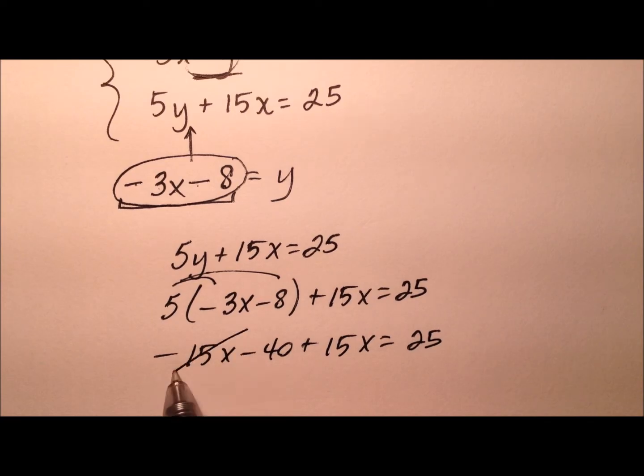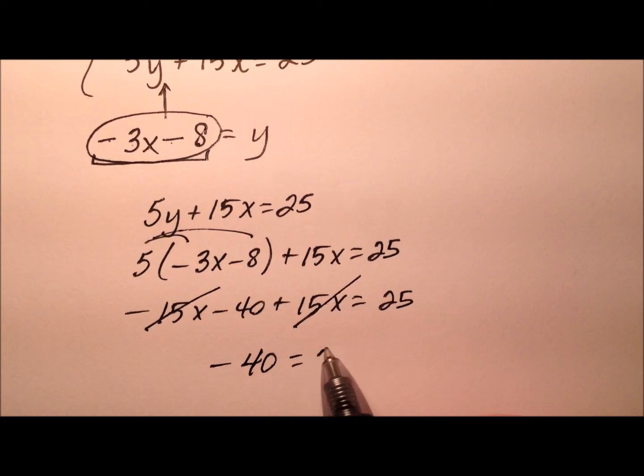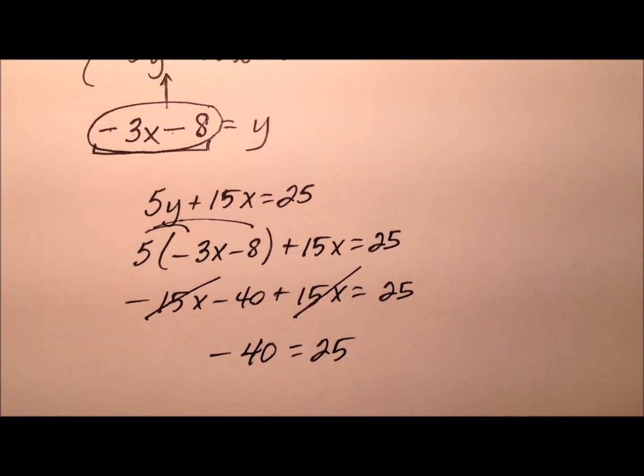The negative 15x and the positive 15x cancel. And I'm left with negative 40 equals 25.